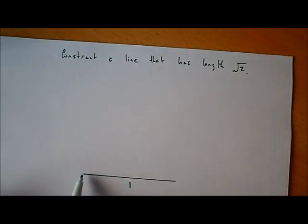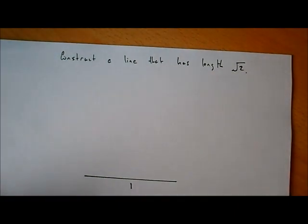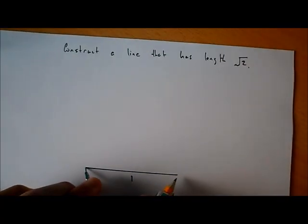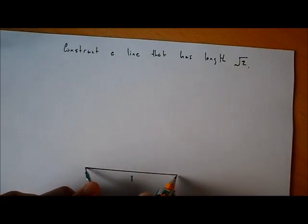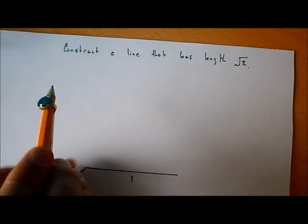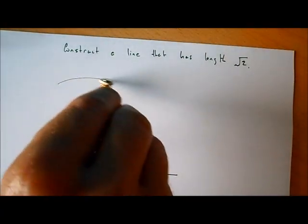Now we want to draw a perpendicular line — a line coming up here that also has length 1. In order to make sure that the line has exactly the same length as that one, I'm going to get my compass, put the point over here, and put the pencil part over here to measure that line. Now we have it exactly the same. I'm going to swing an arc around here like this.